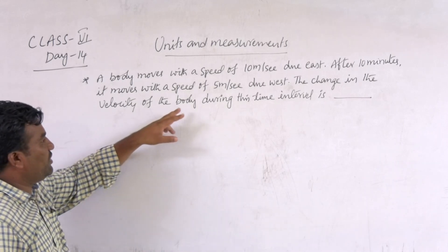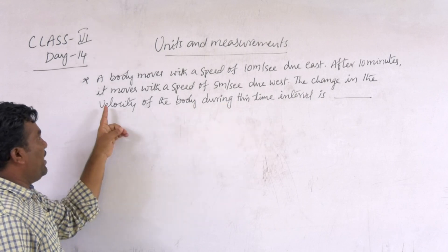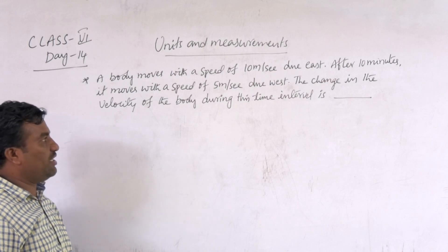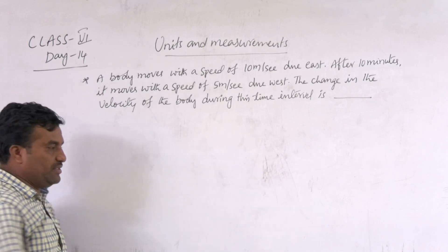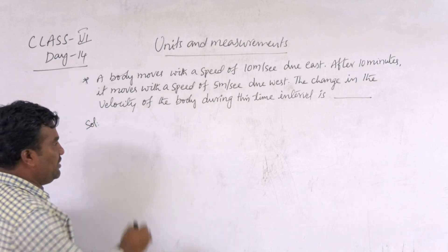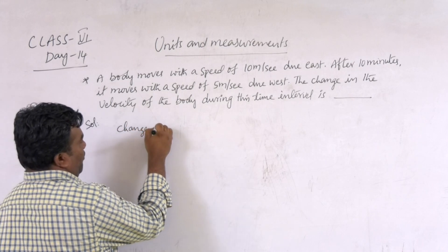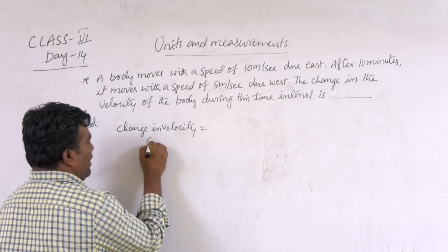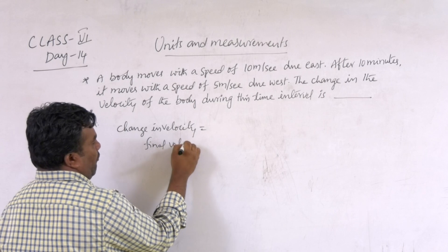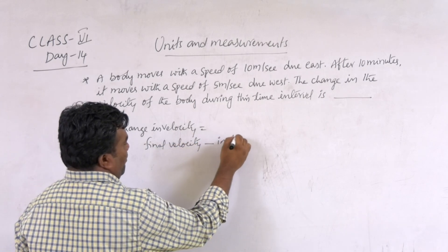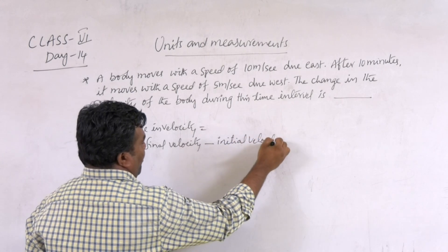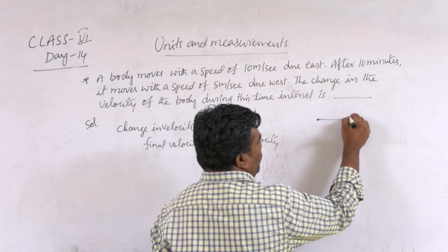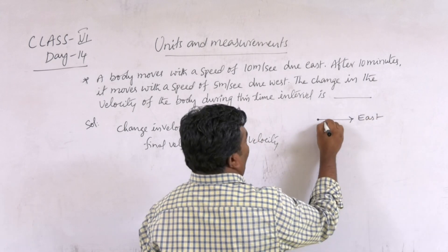A body moves with a speed of 10 meters per second to the east. After 10 minutes, it moves with a speed of 5 meters per second to the west. The change in velocity of the body during this time interval is? So now we are discussing change in velocity. What is the formula? Final velocity minus initial velocity. First, it goes due east. How much? 10 meters per second.